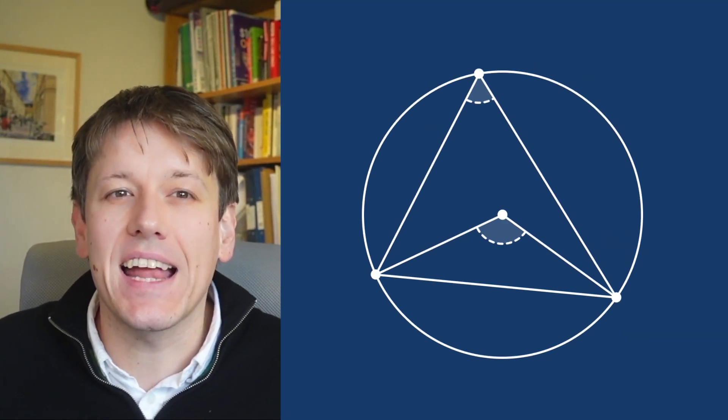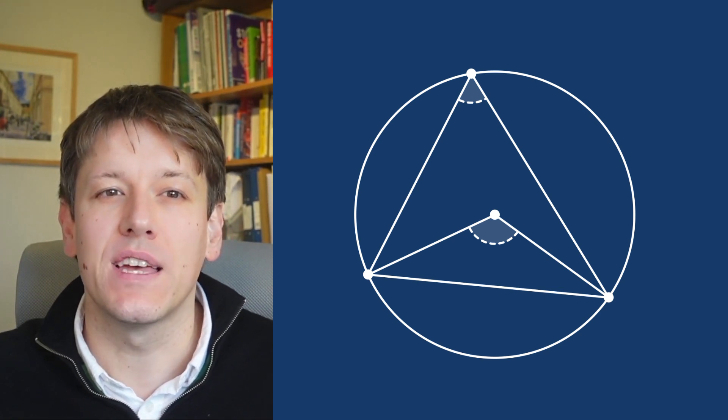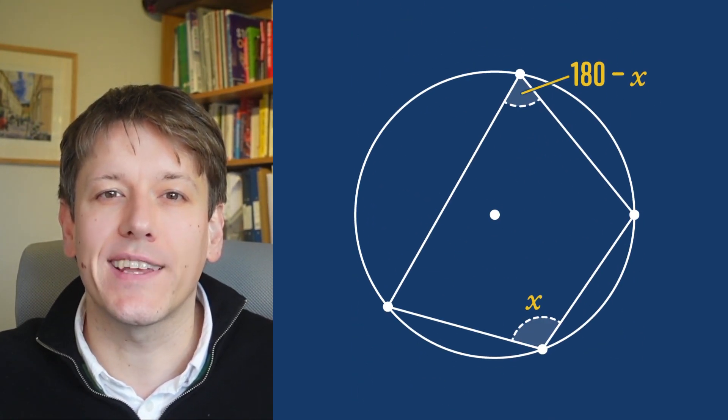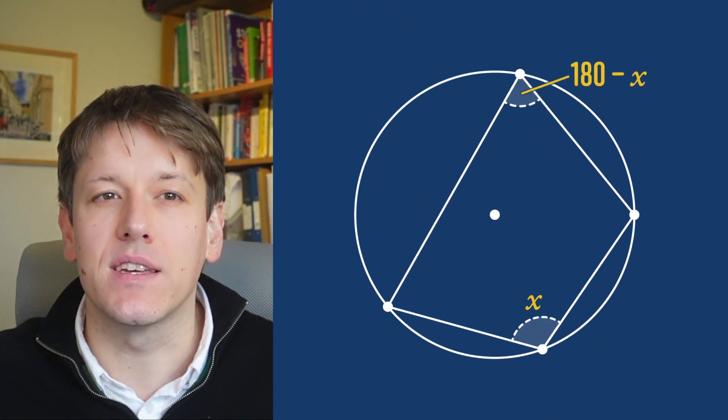If you had a good teacher, you might have seen proofs of why the circle theorems are true. These are the theorems that tell us things like the angle at the centre is double the angle at the circumference, and angles in a cyclic quadrilateral sum to 180 degrees. But most of the time, the proofs given for these theorems are wrong, or at least incomplete, because they miss out some important cases.